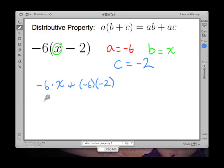And now we simplify. Negative 6 times x is negative 6x. Negative 6 times negative 2. That's a negative times a negative. So that's going to be a positive 12. And it looks like we are completely simplified. So our expanded form is negative 6x plus 12.